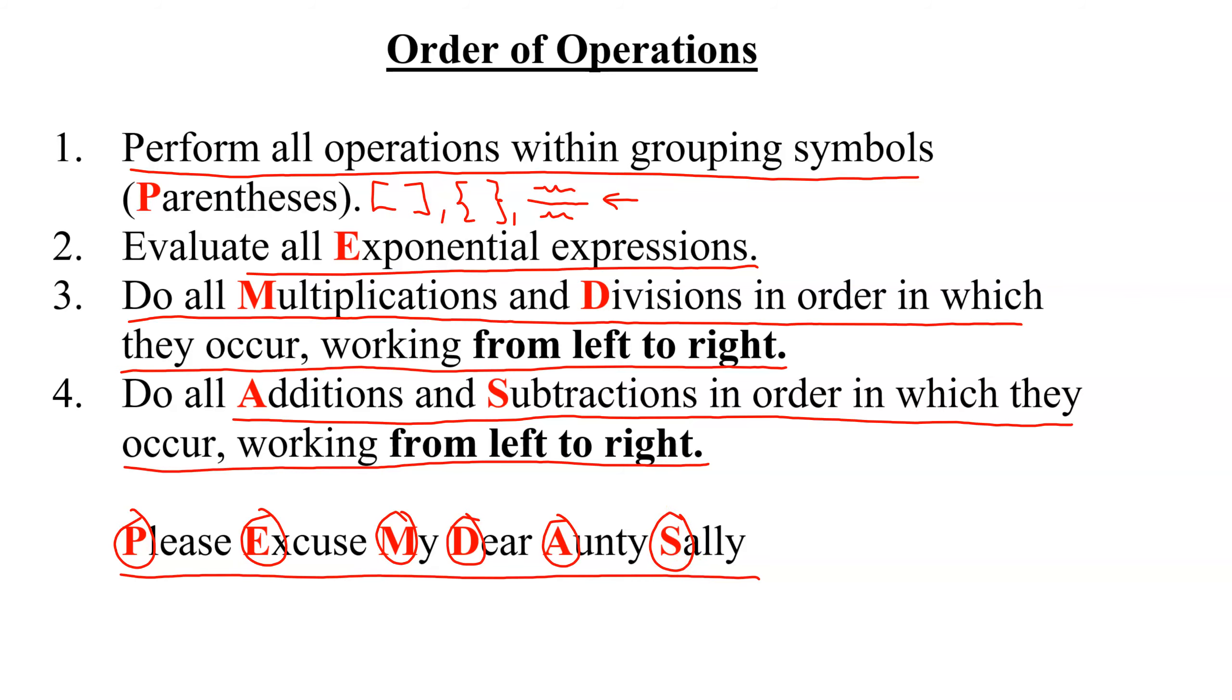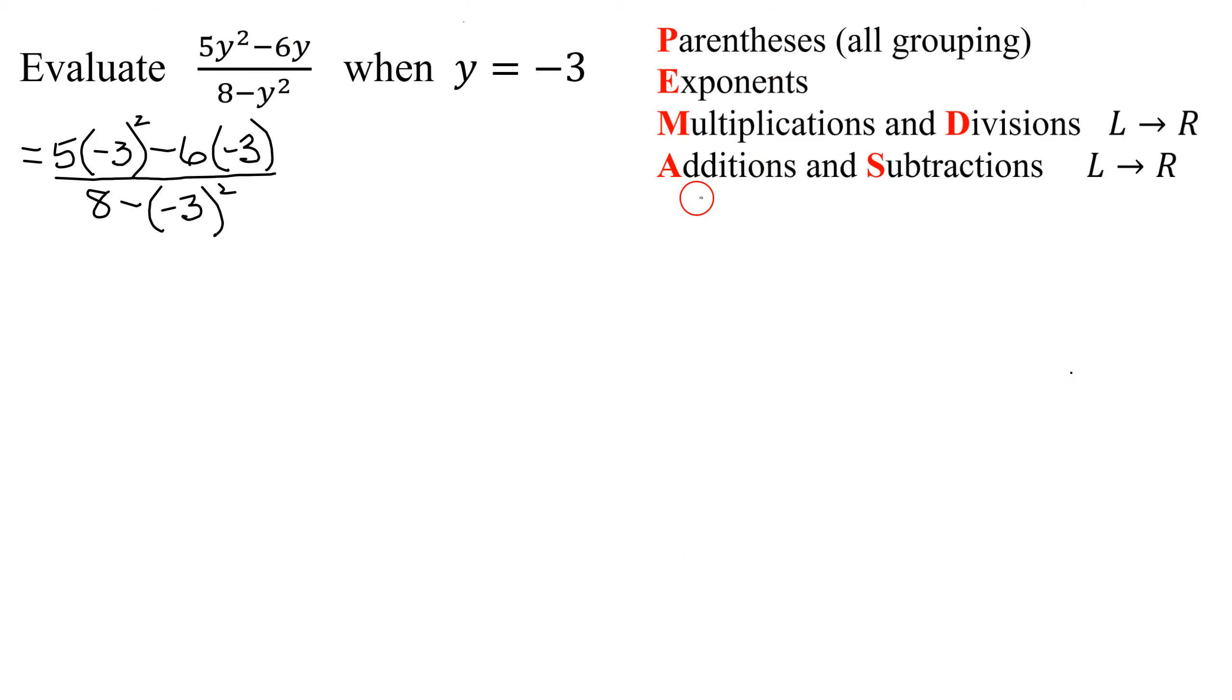So now we're ready to evaluate our expression. I have written a summary of the order of operations up here. And so now we're ready to go. The first thing, do I have any grouping symbols? I have a bunch of parentheses, but are there any operations to do inside? No, there's nothing to do inside any of the parentheses. But there is a grouping symbol here that's harder to see, and that's the division bar.